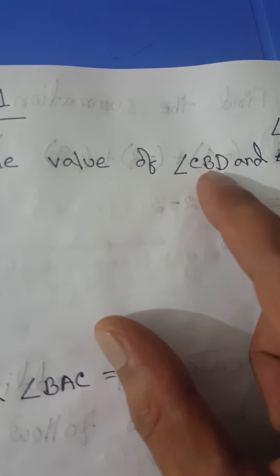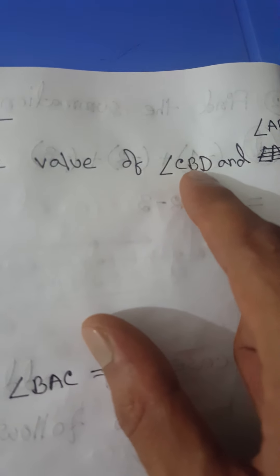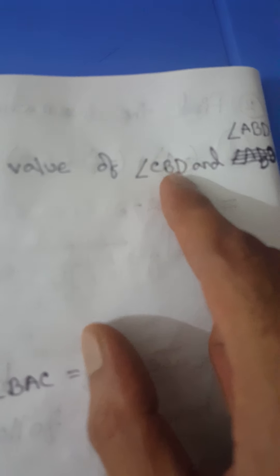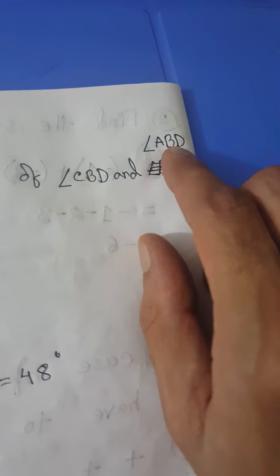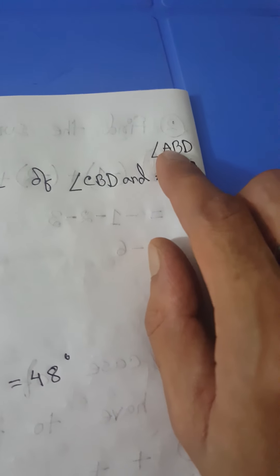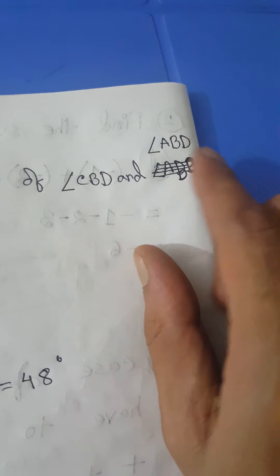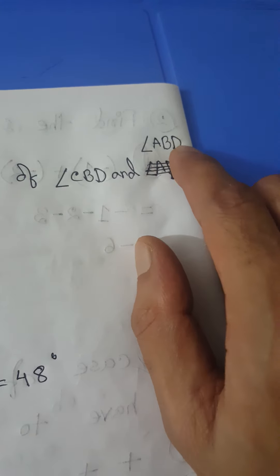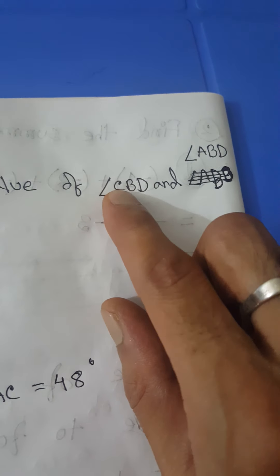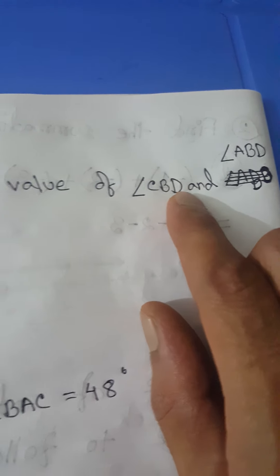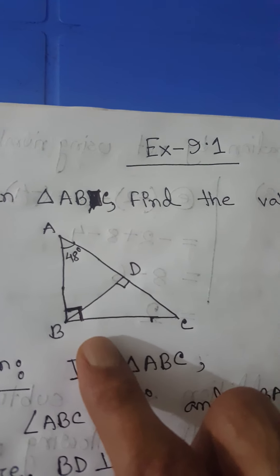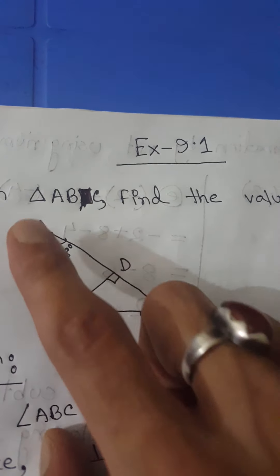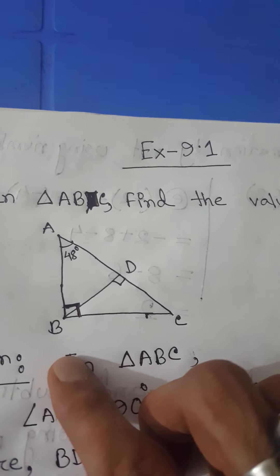The middle letter always represents the angle. So in angle CBD, B is the middle letter, so this represents angle B. Again, in angle ABD, B is also the middle letter — A is the initial point and D is the final point. In CBD, C is the initial point and D is the final point.